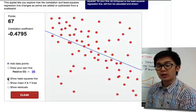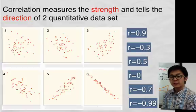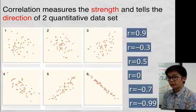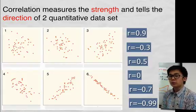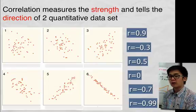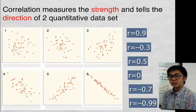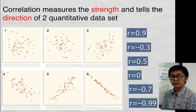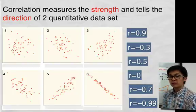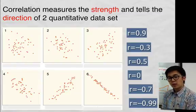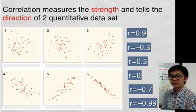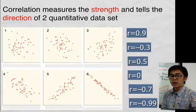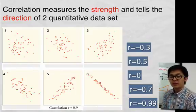Let's have another experiment on the value of R and how it looks in a scatter plot. In this illustration, we have six scatter plots and six R values. Starting with R equal to 0.9 — the relationship should be fairly strong and positive. We can eliminate scatter plots 1, 2, 3, and 6 (which is clearly negative), so R of 0.9 would match our fifth scatter plot.